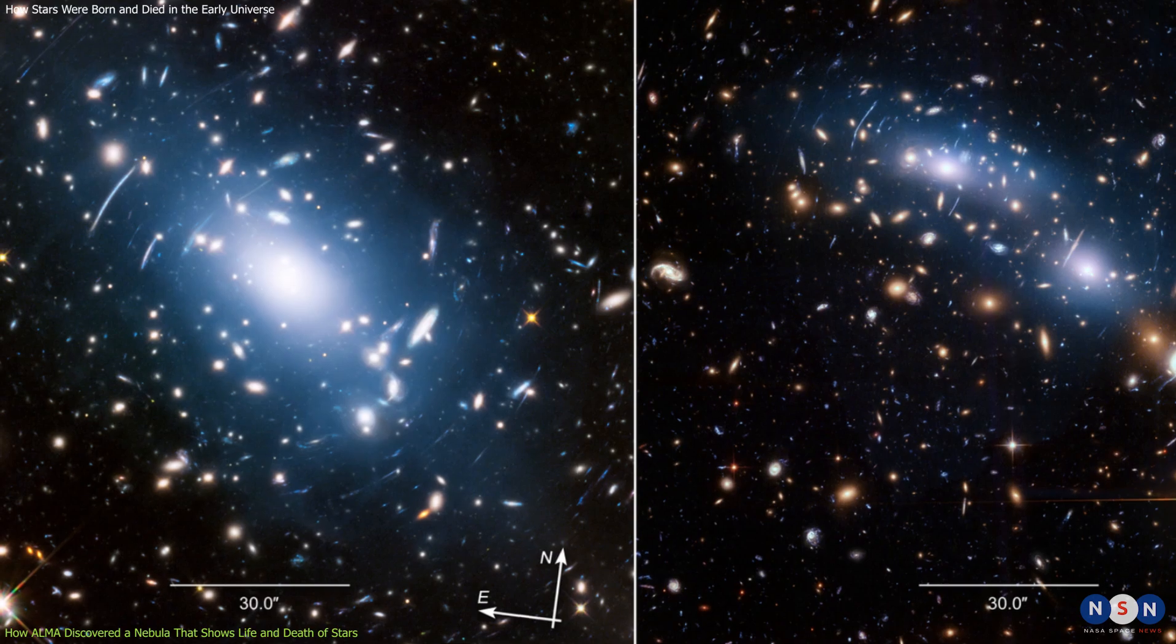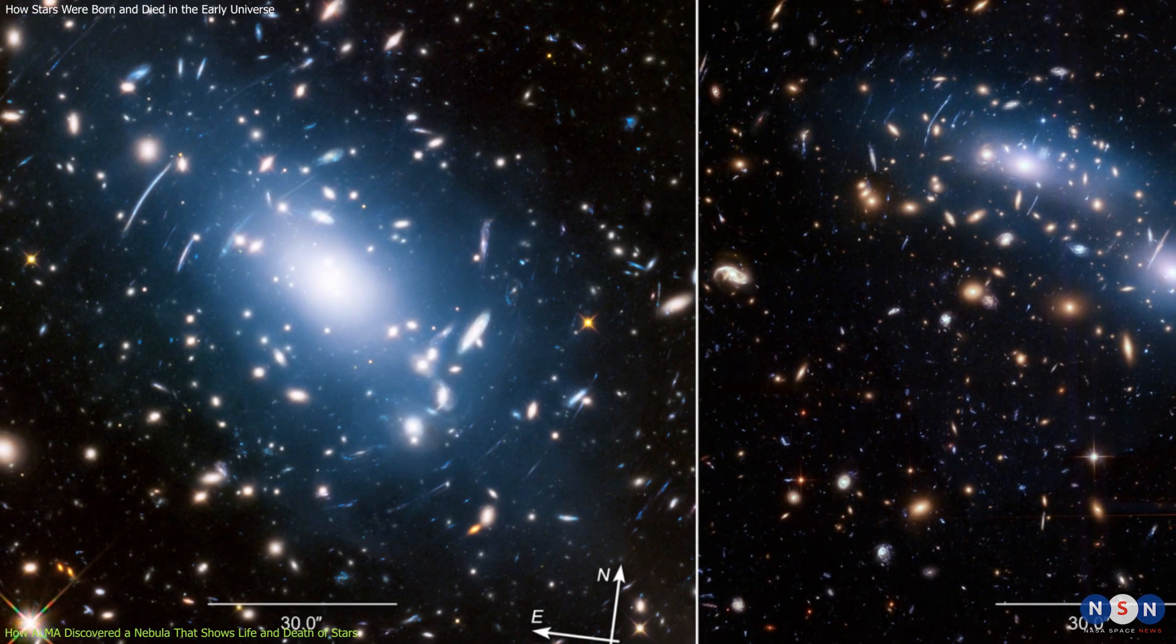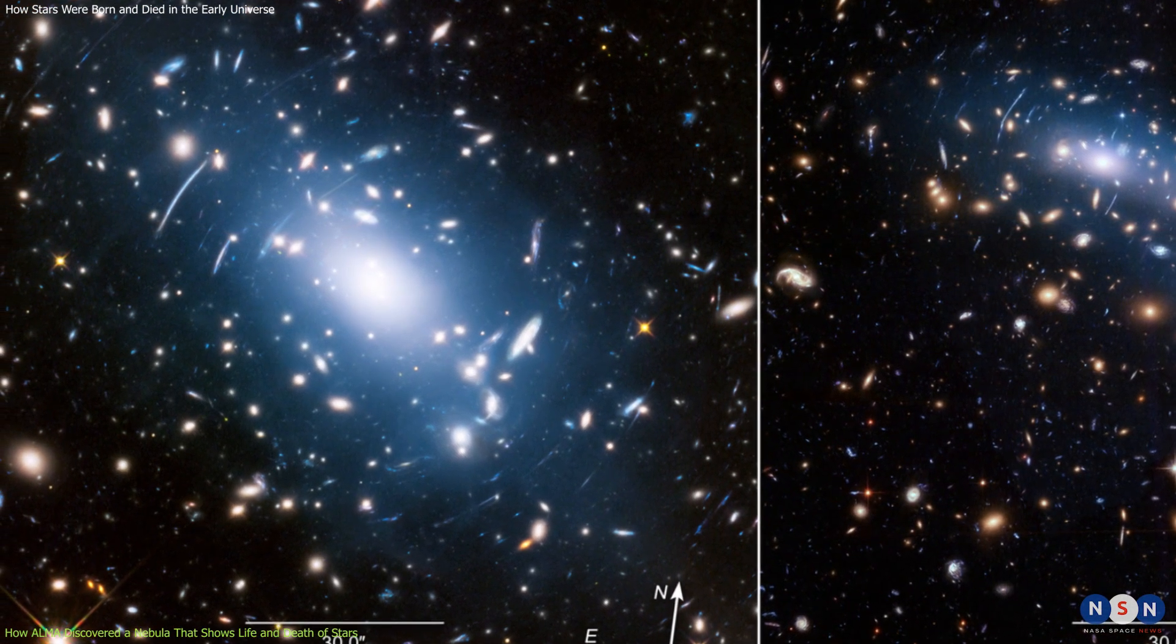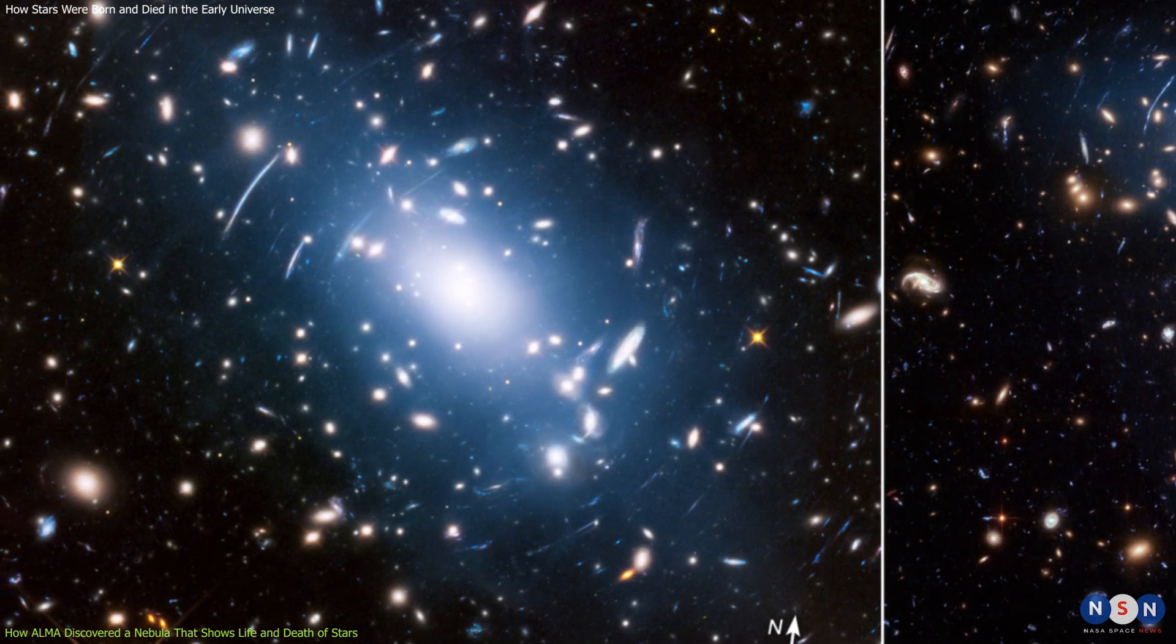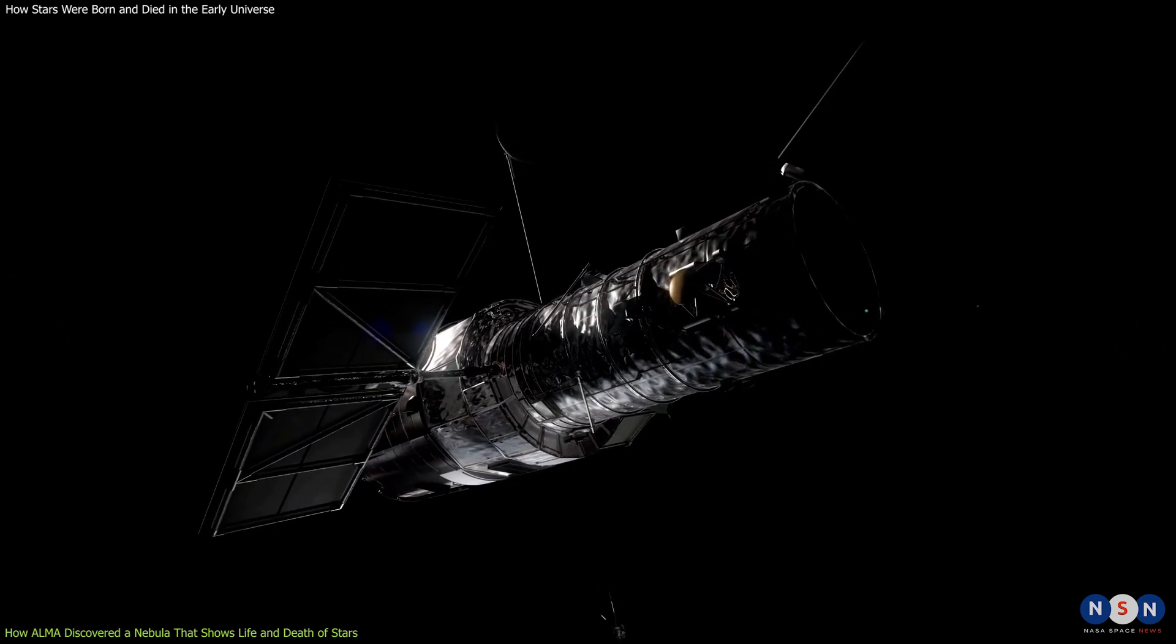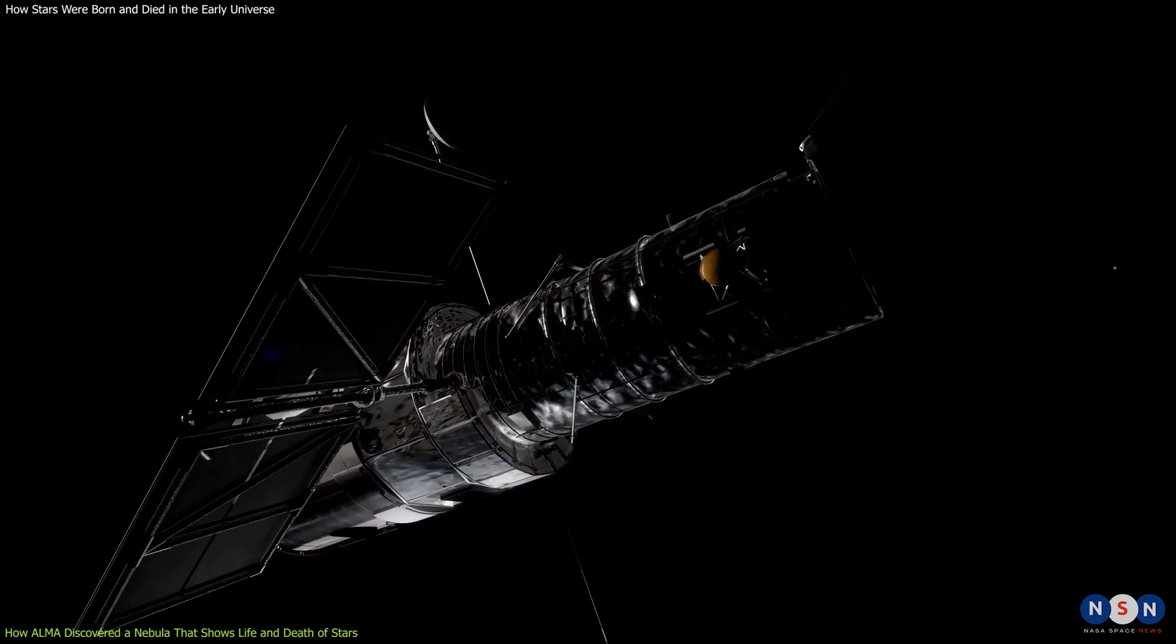Using ALMA, astronomers observed a galaxy named MAX 0416Y1, which is located 13.2 billion light-years away from Earth. This galaxy was first detected by the Hubble Space Telescope, which can observe visible light.